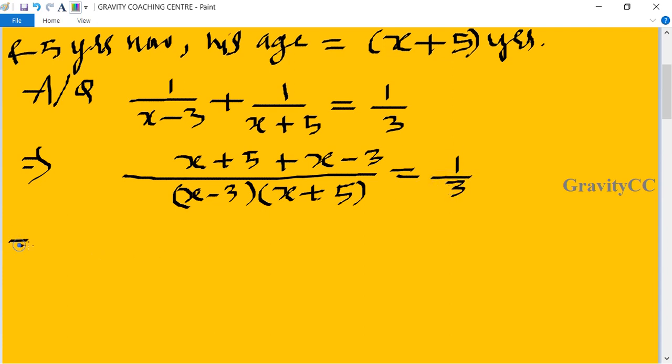Equal to 1 upon 3 implies that 2x plus 2 upon, so after multiplying it will become x squared plus 2x minus 2x minus 15.